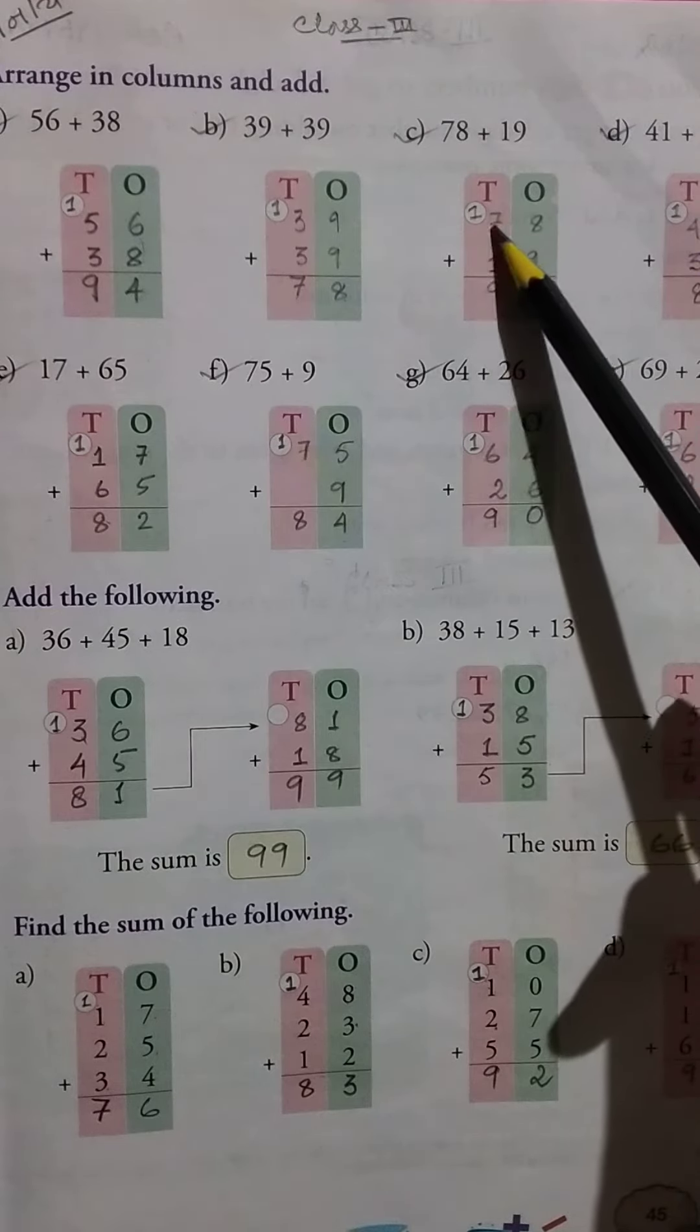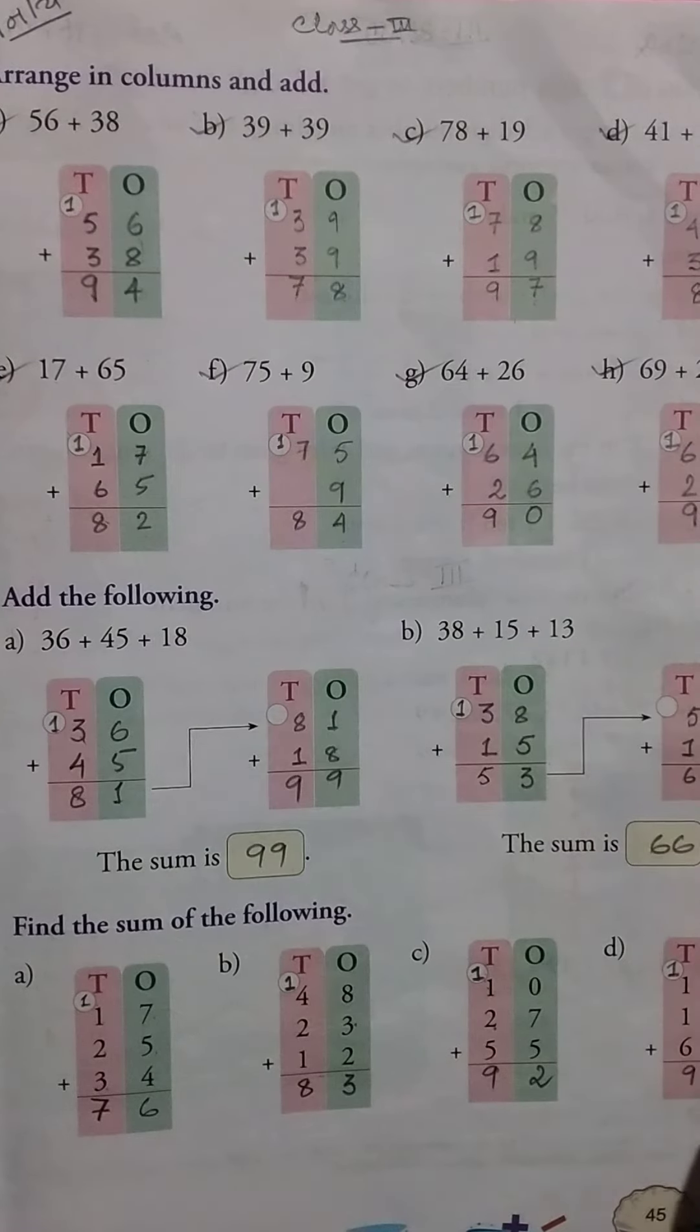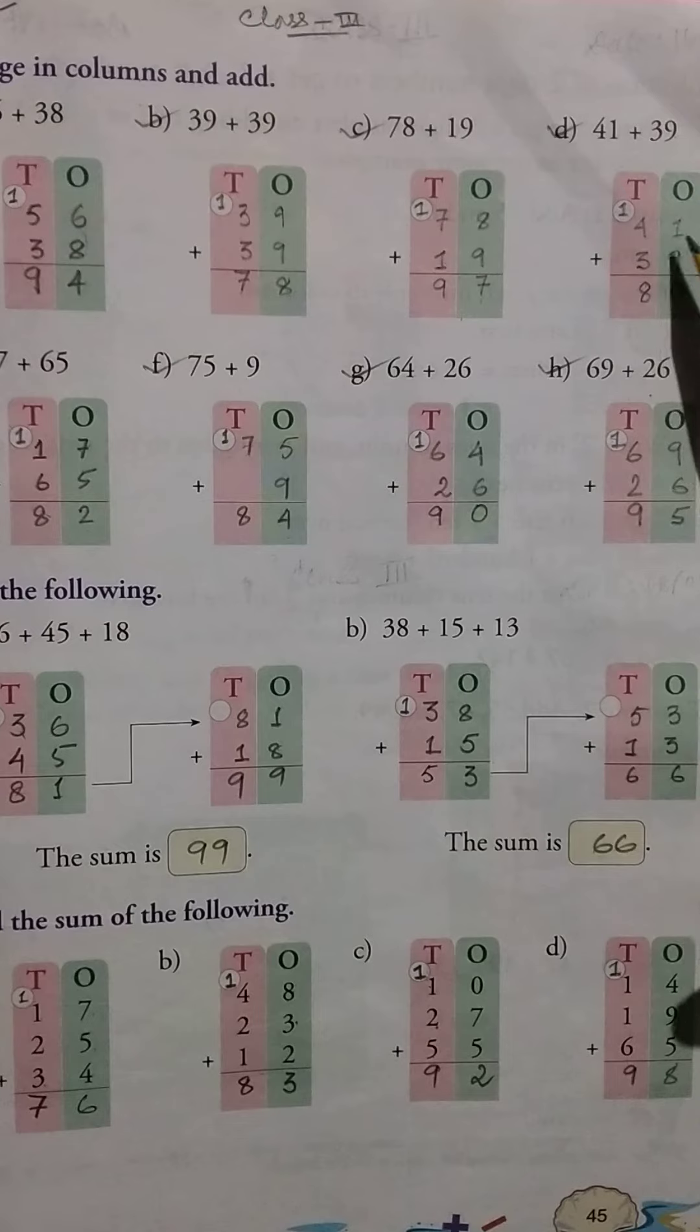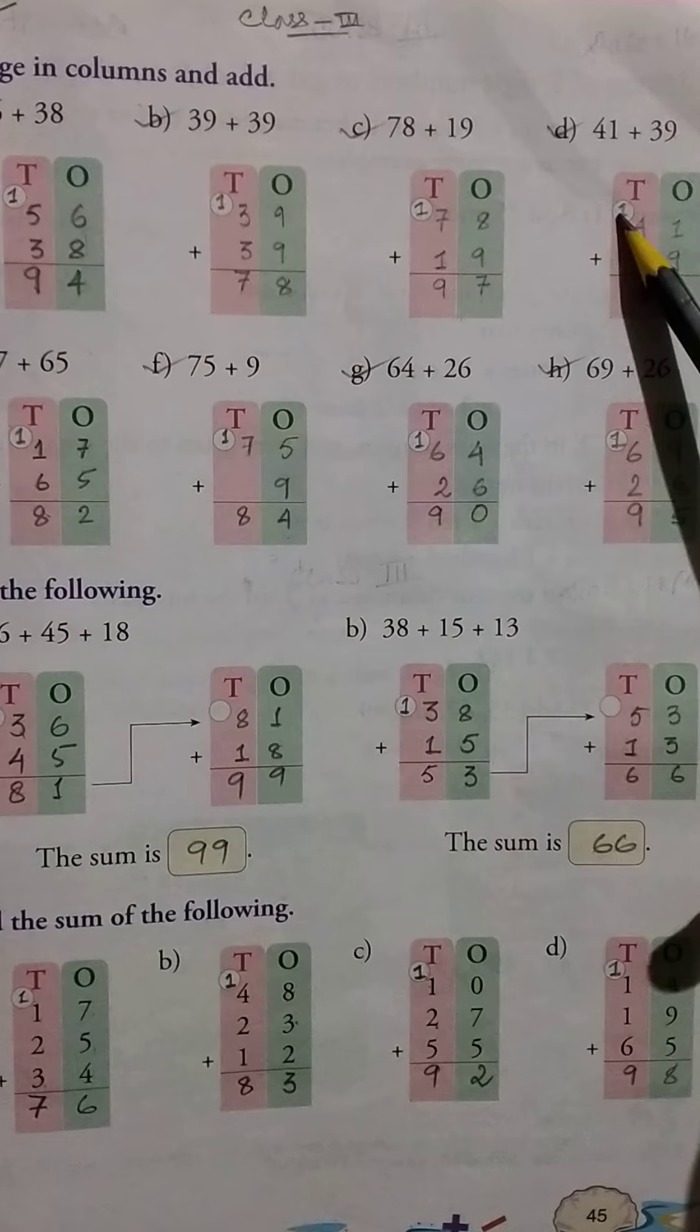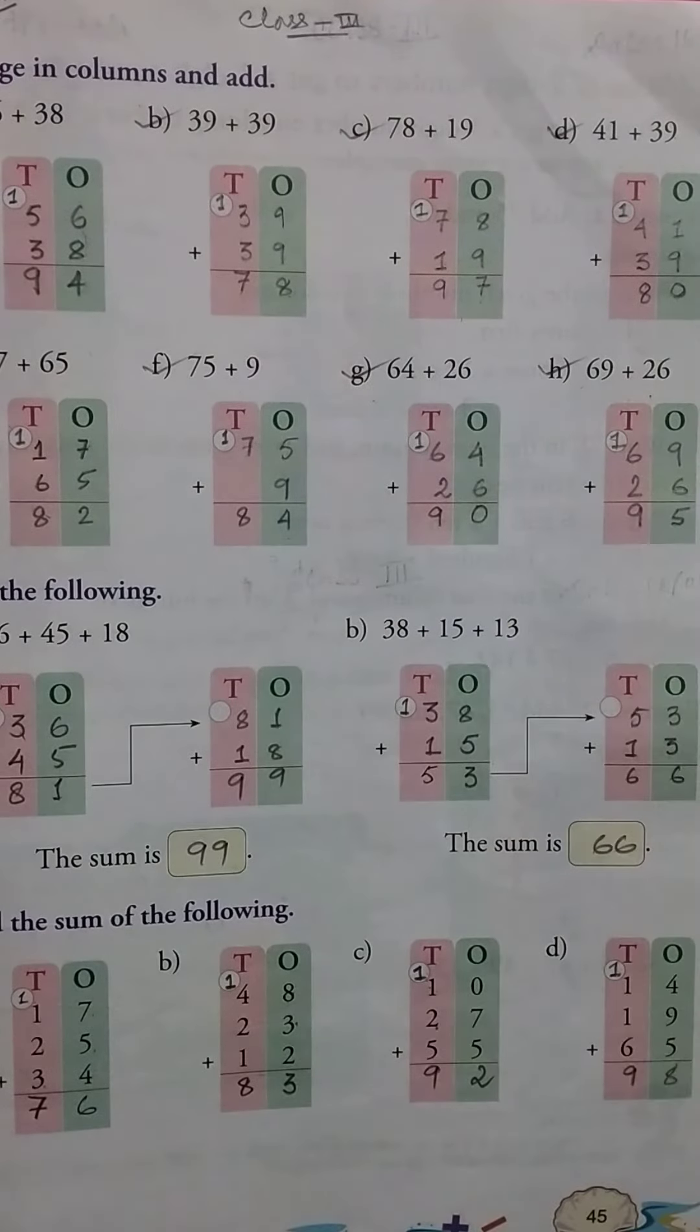Then here 41 plus 39. So 1 plus 9 equals 10, so 0 here and 1 here carry. So 4 plus 1 equals 5, 5 plus 3 equals 8. The answer is 80. So above it you will practice. Thank you.